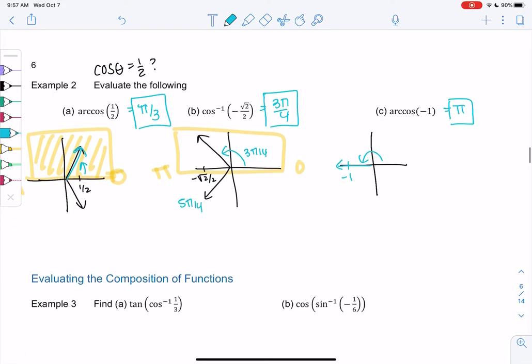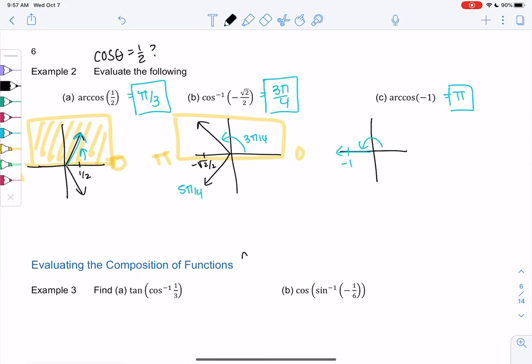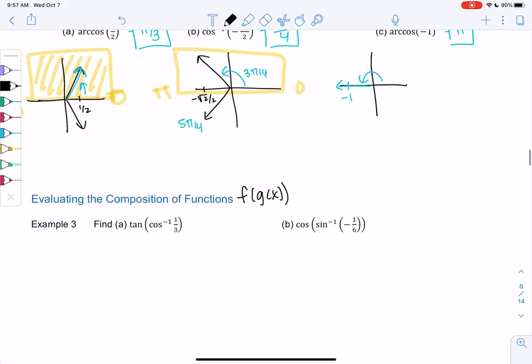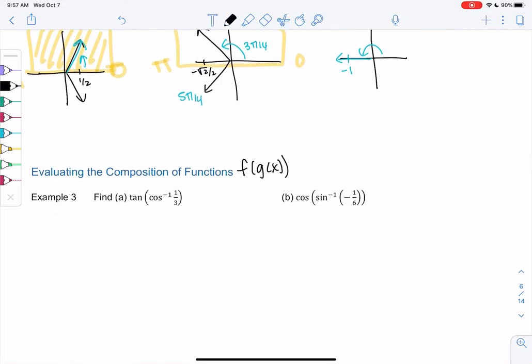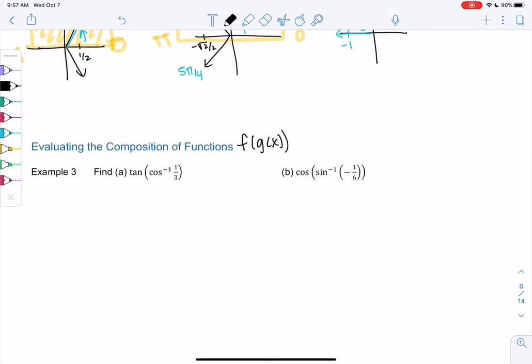Alright, let's try composition of functions. Remember, compositions are like f of g of x. So my inner function is cosine inverse, and my outer function is tangent. So what I'm going to do is I'm going to draw a triangle. So we're going to draw a triangle of what this would look like, cosine inverse of 1 third. So this is basically saying cosine of θ equals 1 third.